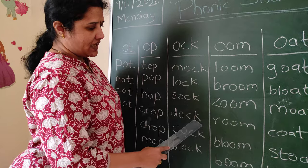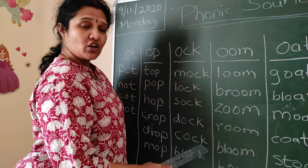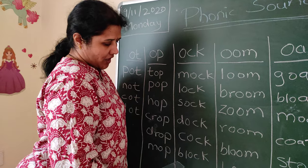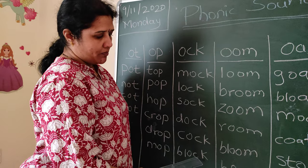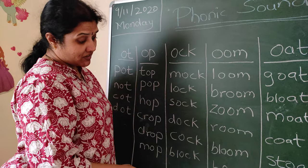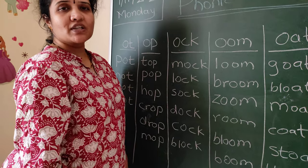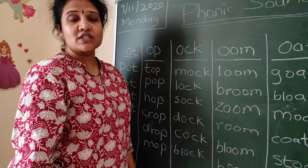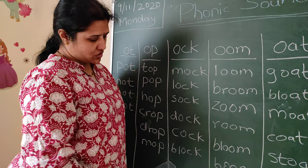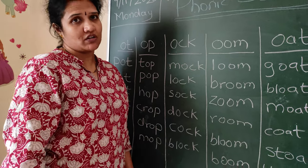D-O-C-K — DOCK. C-O-C-K — COCK, which is nothing but a hen. B-L-O-C-K — BLOCK. One more spelling is missing here — what shows time for you? CLOCK. C-L-O-C-K — CLOCK.